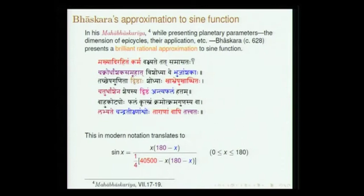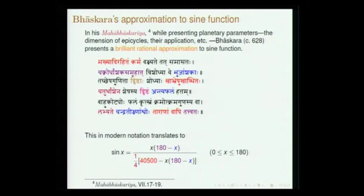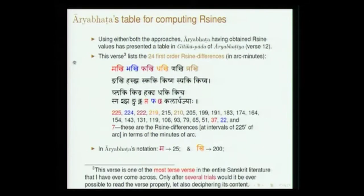Now I come to the interesting approximation found in Bhaskara's work. Before explaining the verse given by Bhaskara, I want to note that Bhaskara starts his approximation to sine by saying 'makhyadi rahitam karma.' Here the word 'makhi' refers to the verse of Aryabhata which starts with 'makhi.' So 'makhyadi rahitam karma' means a certain process by which you can avoid the makhyadi — meaning the table of R-sines can be avoided.